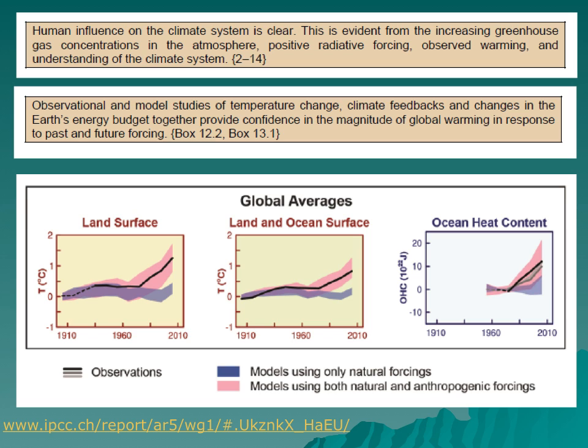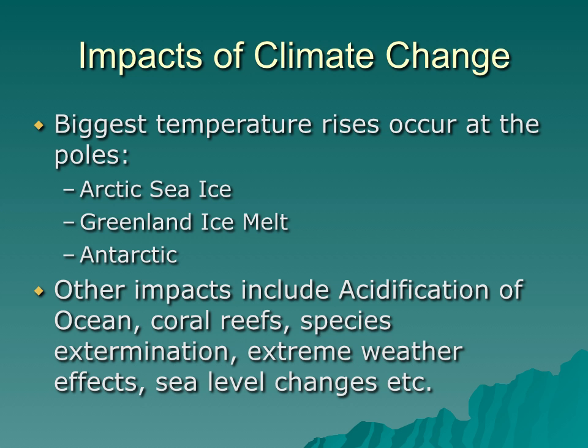Note that a whole range of different models from different scientific institutions were used, since no one model is likely to give us the whole picture. But note also that the models generally show a good level of agreement, so the science is actually pretty clear. We noted earlier that temperatures are rising much faster at the poles than the equator. We also noticed that we are seeing other changes such as in ocean acidity, sea level rises, etc.